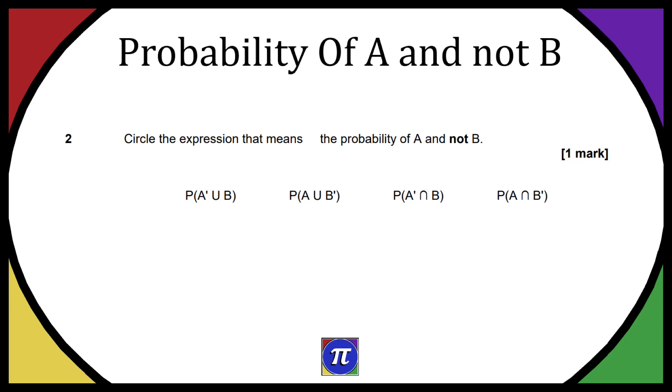So we have question two from the past paper, link down below, and we have a probability question. Now we need to circle the expression that means the probability of A and not B, and we have four options. I'm going to go through all of them and explain what they are and which one is the correct answer and why.